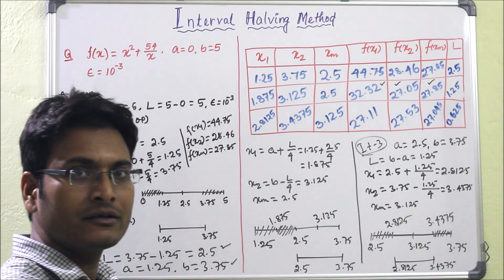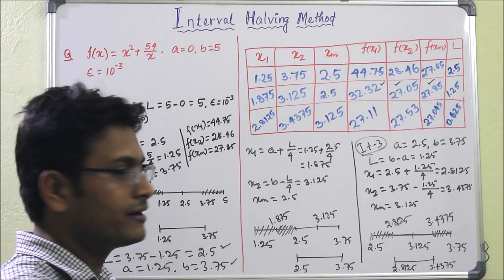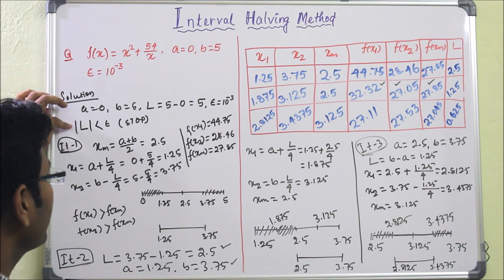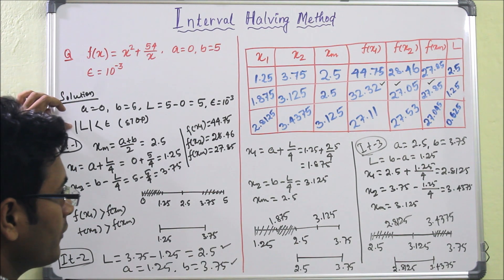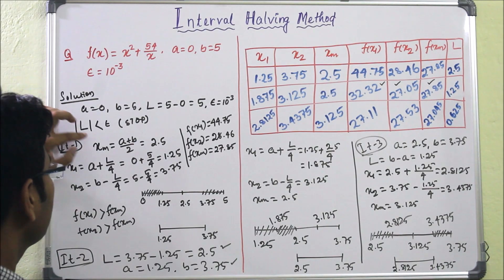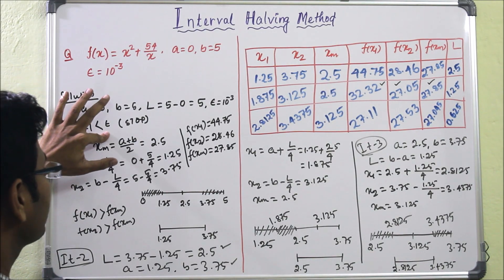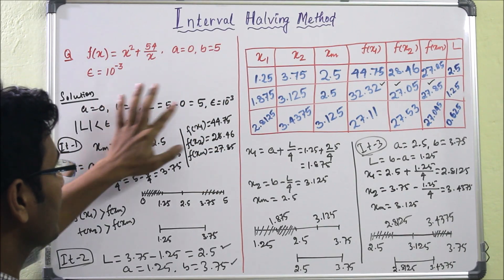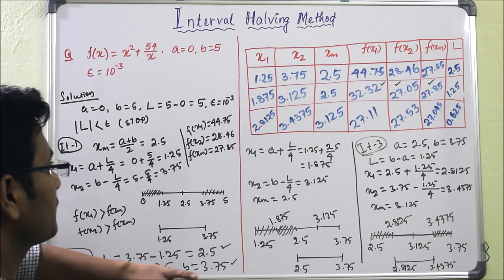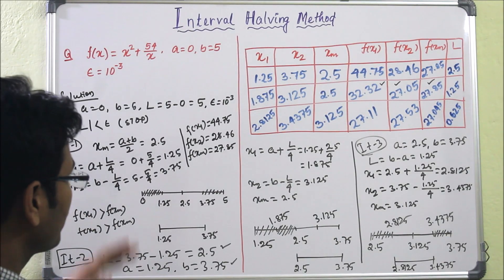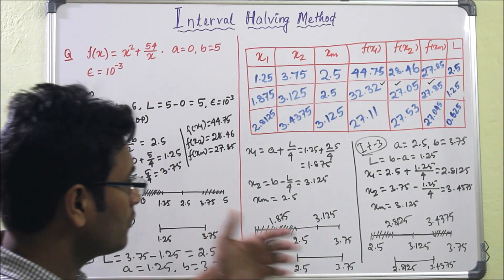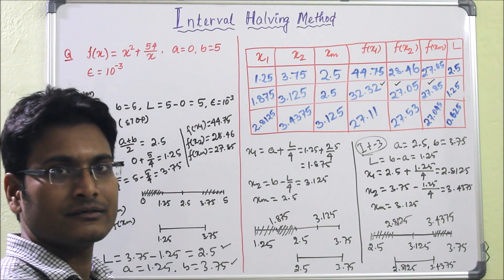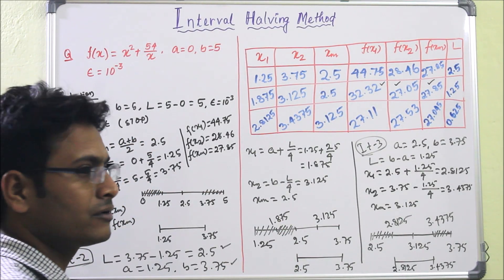We have presented three iterations here. In the question, either the number of iterations will be specified, or a stopping criterion is given. If the stopping criterion is given, every iteration we must check whether L < ε = 10⁻³. If not, we continue with more iterations until the condition is satisfied.